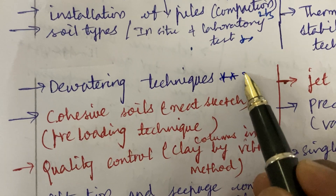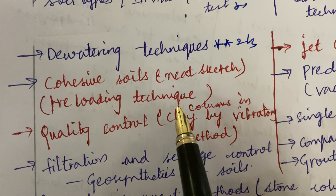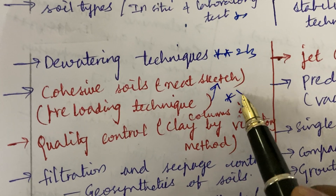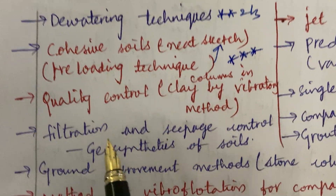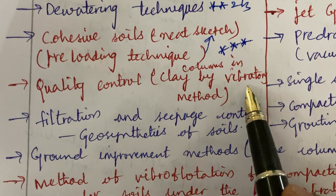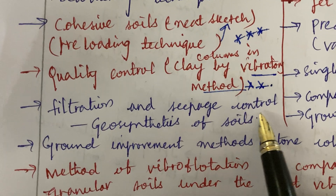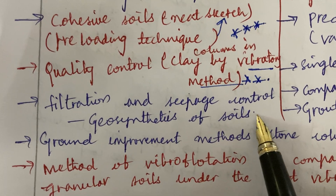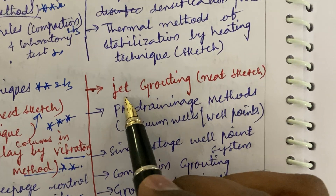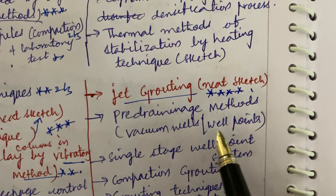Dewatering techniques is a 2 to 3 mark question. Cohesive soil preloading technique with a neat sketch is a topmost gunshot question, which may be 4A. Quality control for clay columns in clay by vibrational method is also a topmost question. Filtration and seepage control, and geosynthesis of soil is a topmost question. Jet grouting is said to be a topmost and expected question this time.